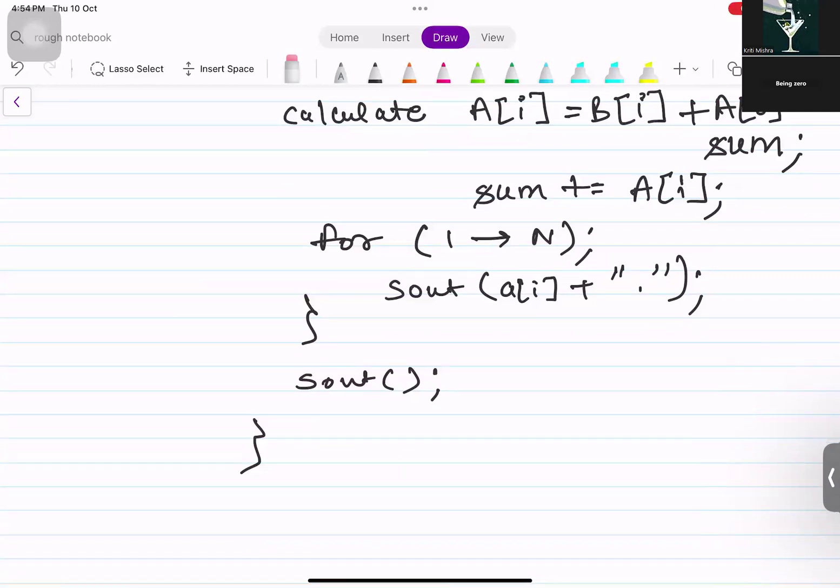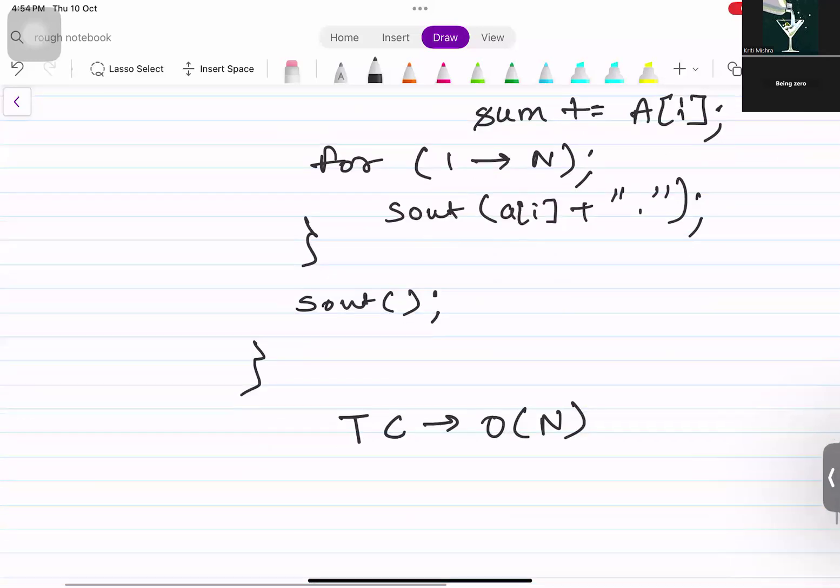Time complexity for this question. Time complexity for this question as we are using, our loop is running from one to n only, and we are using the optimized approach only. There is not any difference between brute force and optimized approach in this question. So it would be O(n) only, where n is the length of the array. Space complexity would be O(1) only because we are not occupying any extra spaces.